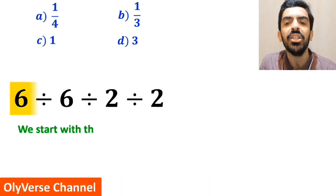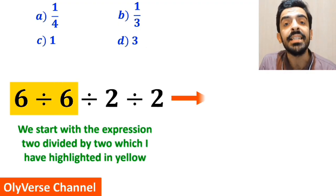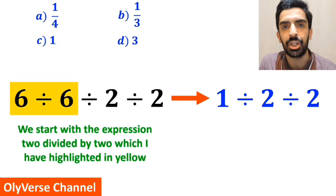So first we start with the expression 6 divided by 6, which I have highlighted in yellow. And instead of this expression, we can write 1 divided by 2, then divided by 2. Now, we can rewrite 1 divided by 2 in the form of a fraction. So this expression becomes 1 over 2 divided by 2.